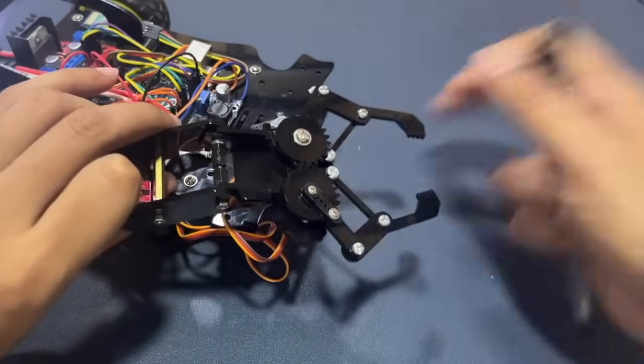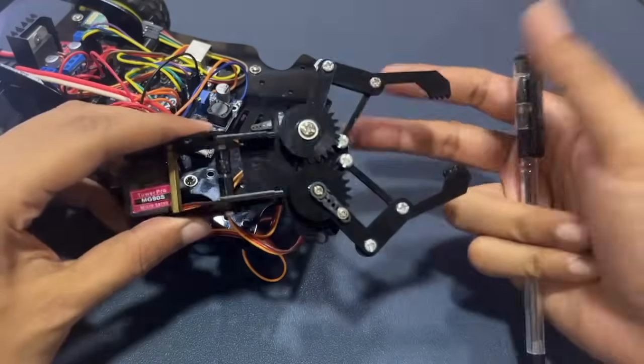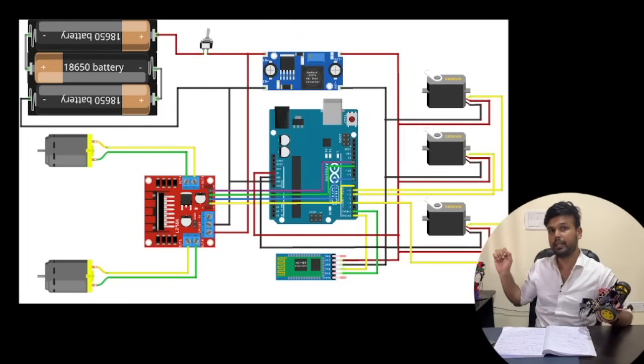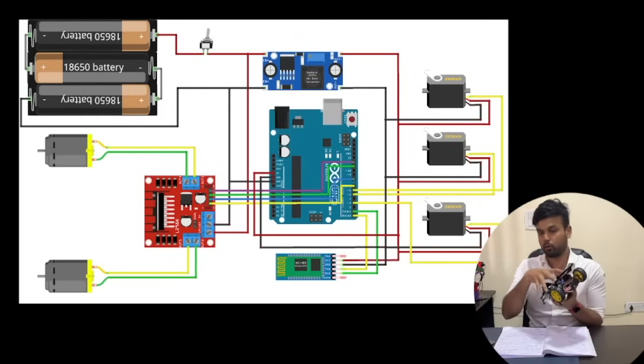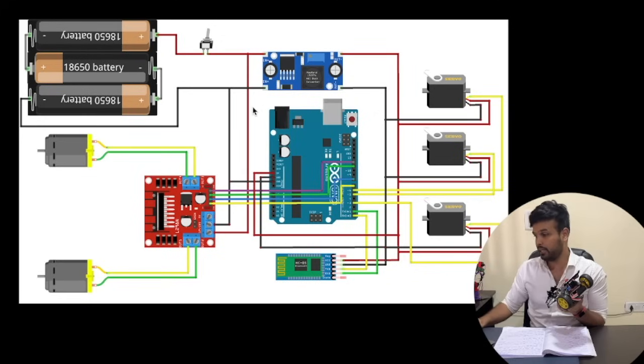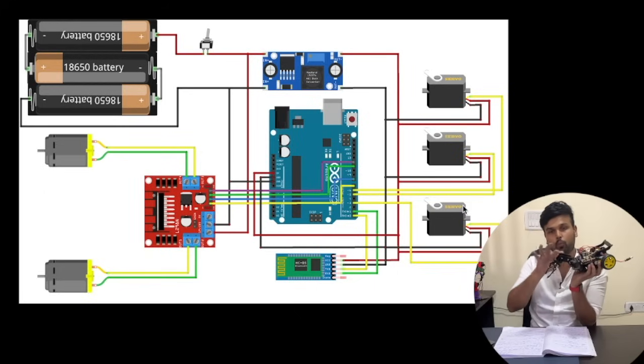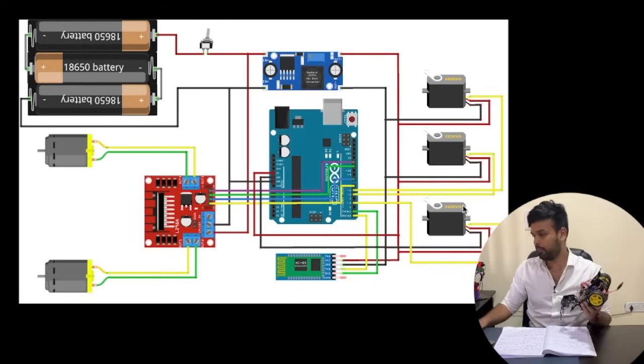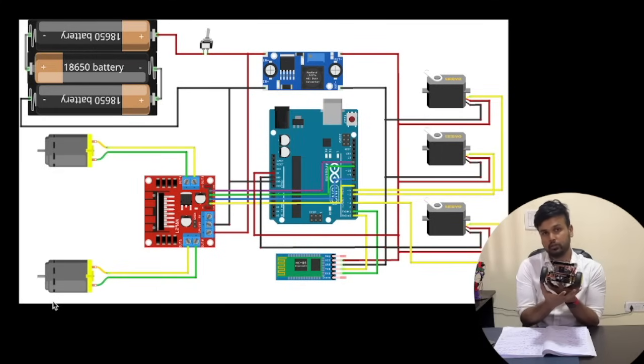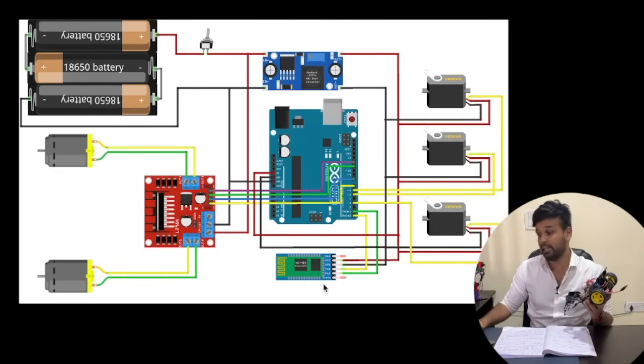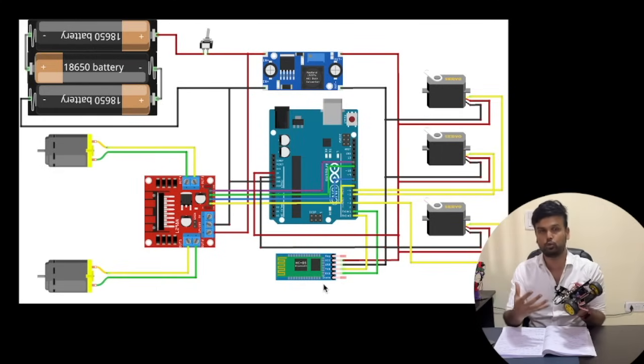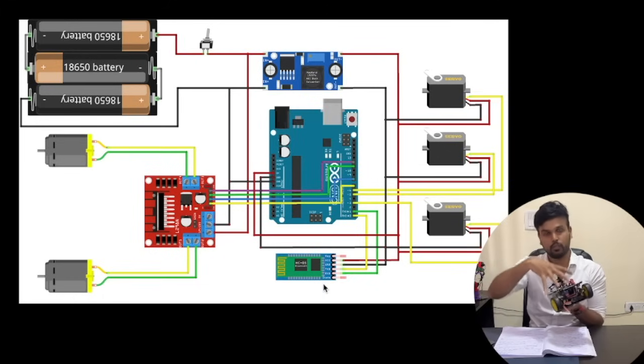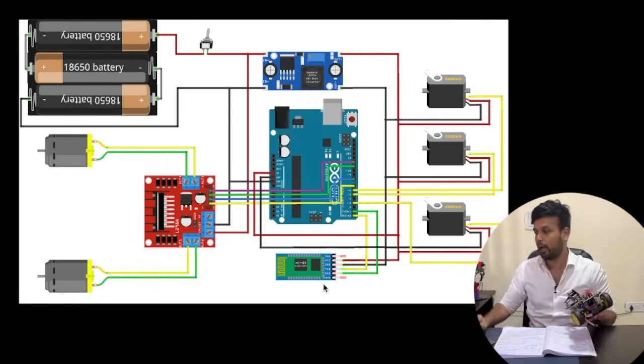So you can see the complete circuit diagram that we have used for our robot over here. The main brain of this robot is the Arduino Uno and then we have three servo motors for the robotic arm in front, and then we have our two DC motors for the wheels of the robot. And then we have the HC-05 which acts as a Bluetooth module. So we'll be controlling this robot using Bluetooth. And then we have the buck voltage regulator module and a lithium battery for powering the whole setup.